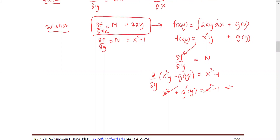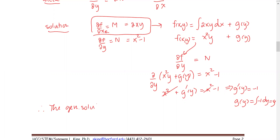That tells us g'(y) equals negative 1. We find g(y), which is the integral of negative 1 with respect to y, giving us negative y. Therefore, the general solution is f(x,y) equals c, or x squared times y minus y equals c.